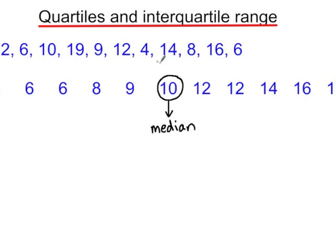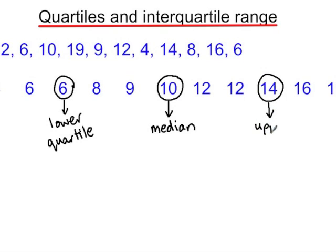When we're working with quartiles, we're dividing the data into quarters. We look at all of the scores below the median and find the median of those scores, and this is known as the lower quartile. Then we look at all of the scores above the median and find the median of those values, and this is known as the upper quartile.